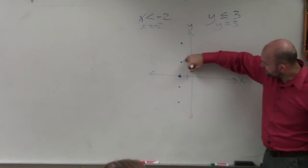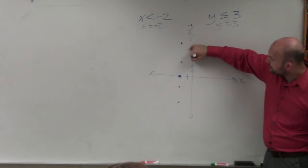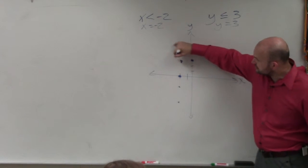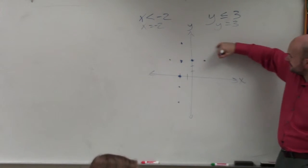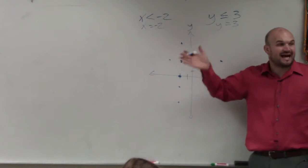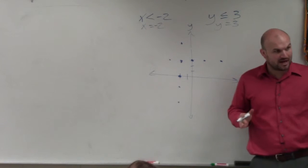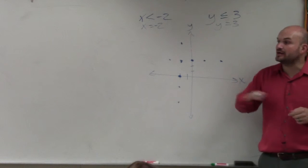Where y equals 3 would be 1, 2, 3. y always equals 3. So that's going to create a horizontal line. So if you guys can just remember, when x equals something, that creates a vertical line. When y equals something, that's going to create a horizontal line.